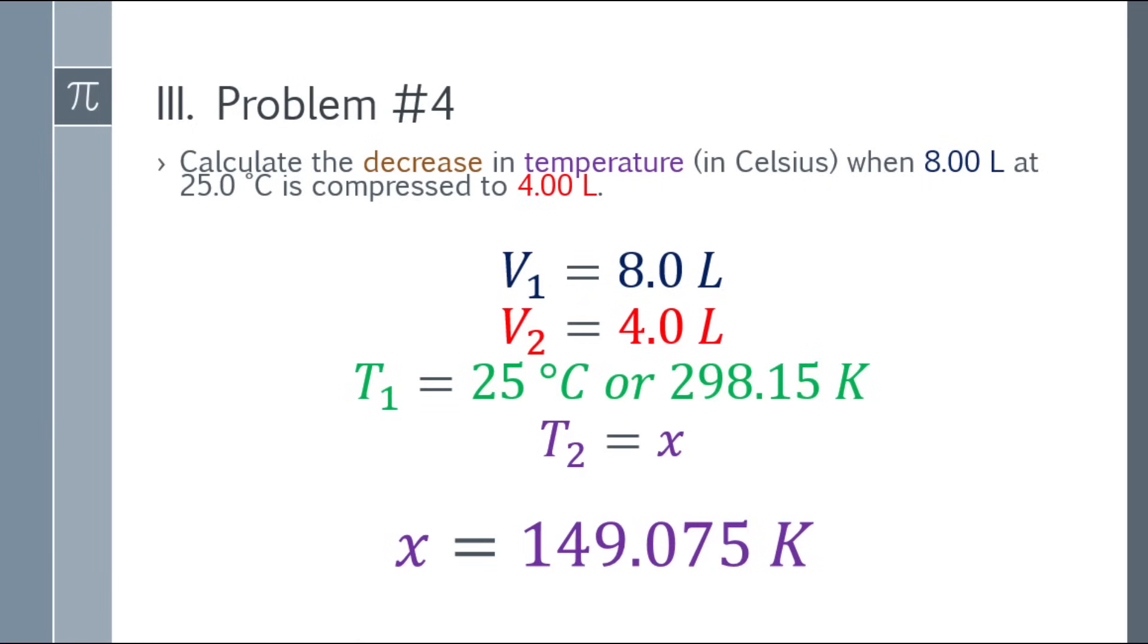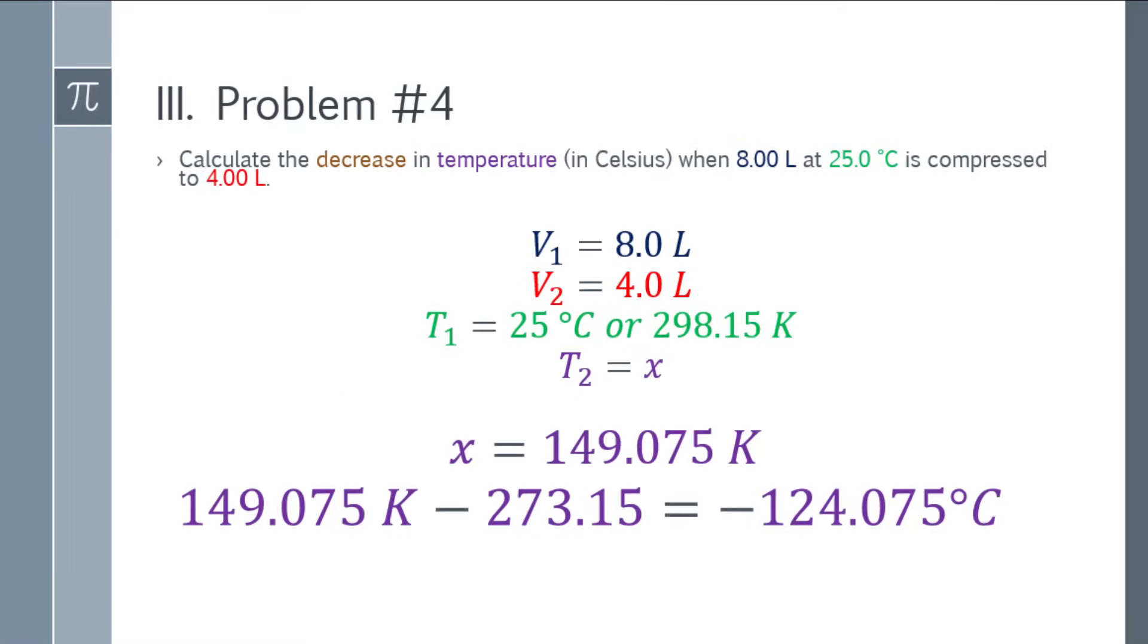Okay, we've found the resulting temperature. However, we need to find the decrease in temperature in Celsius. So how do we do that? Convert it to Celsius first. 149.075 Kelvin minus 273.15, and you will get negative 124.075. So that's now in Celsius.